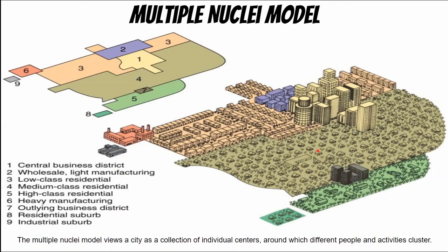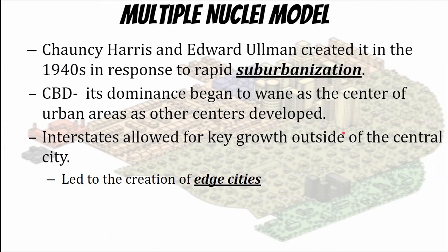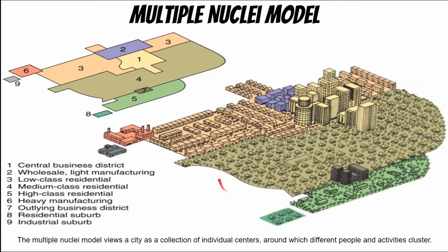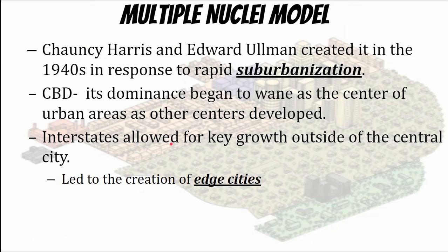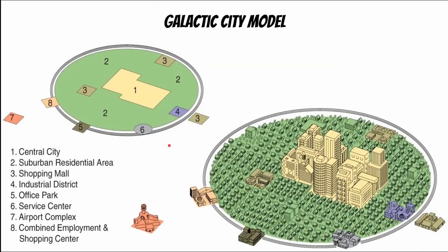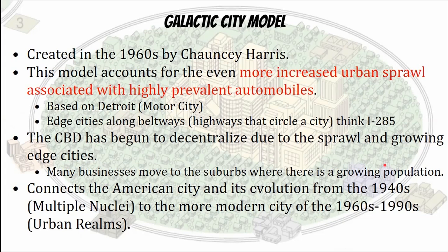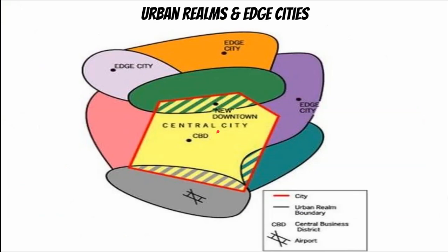After World War II in the 1940s came the multiple nuclei model, made by Harrison Ullman. The first two models were hyper-concentrated around the CBD, but the multiple nuclei model is about suburbanization and the growth of cars and automobiles, leading to the growth of edge cities. The CBD is no longer as important — people are living further away with cars. Then it evolves into the galactic model, where edge cities are even more prominent on the outside, with more urban sprawl. This one starts around Detroit and the Motor City.